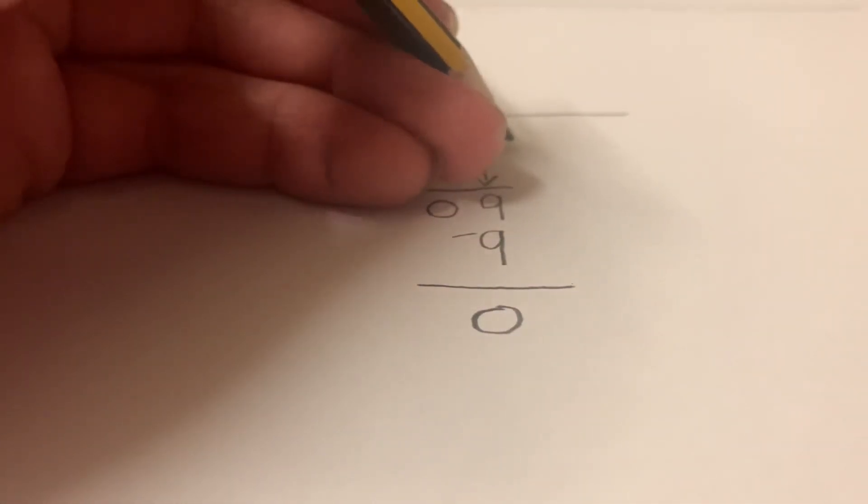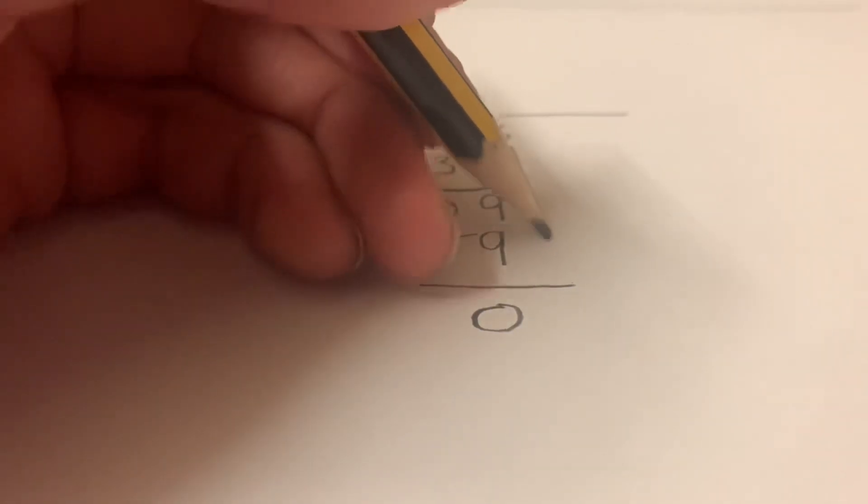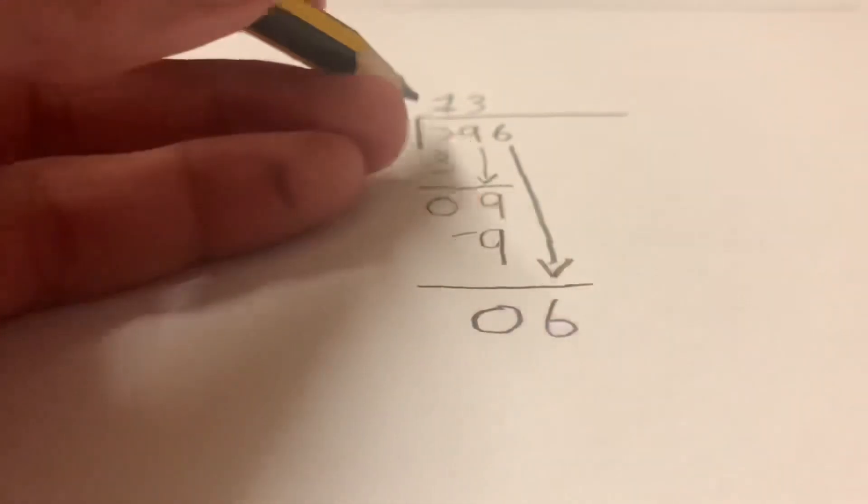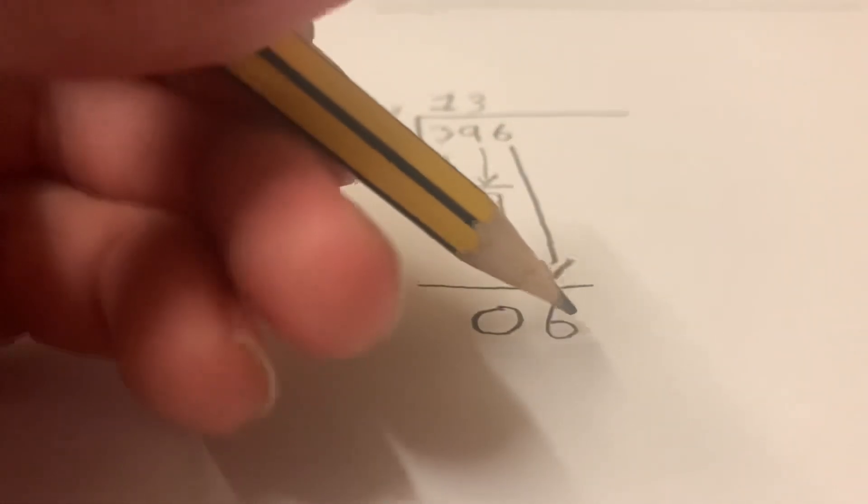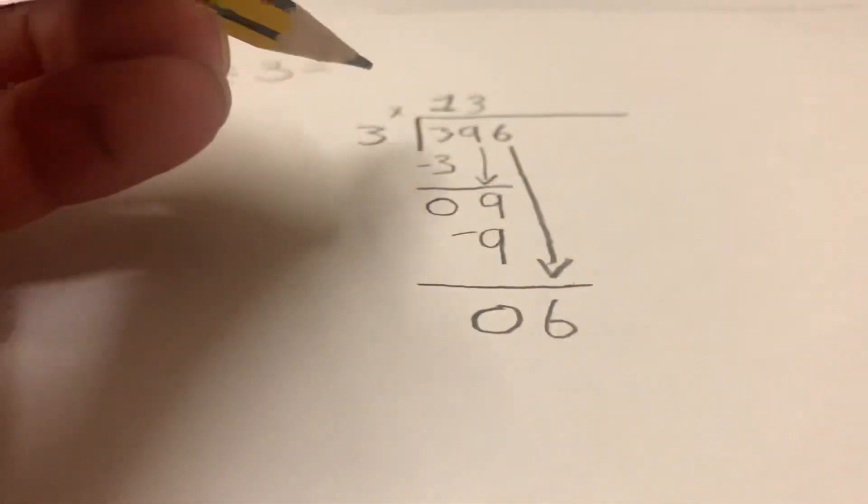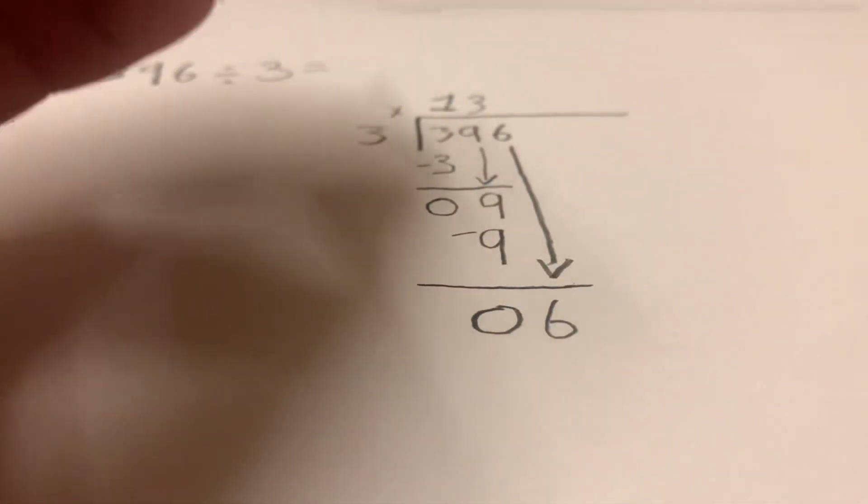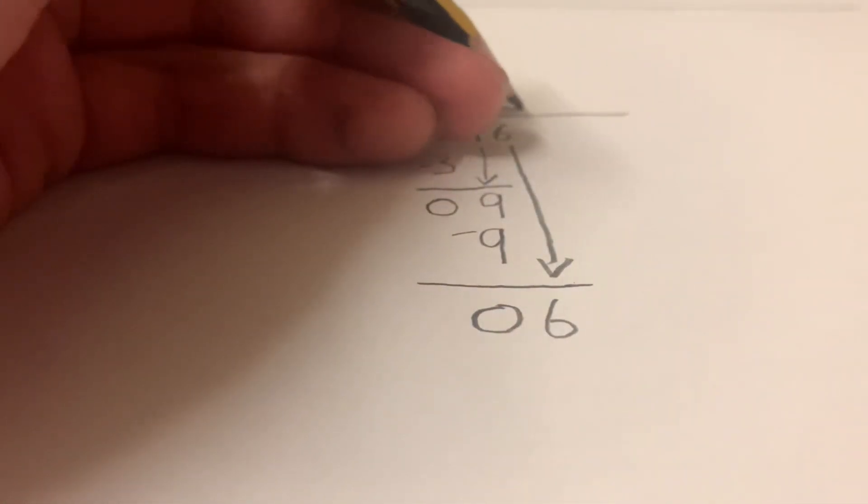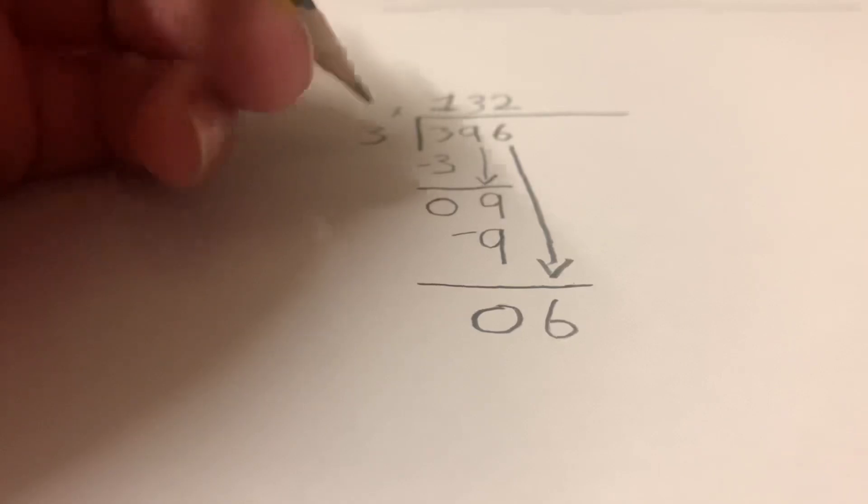Finally, you're going to bring down the six. And then you're going to repeat the steps again. Six divided by three - how many threes go into six? Six divided by three is two. And two times three is six.